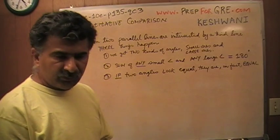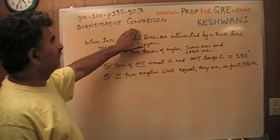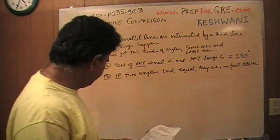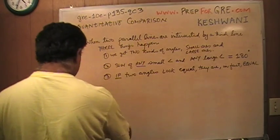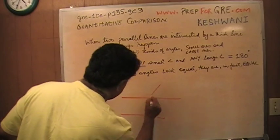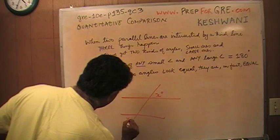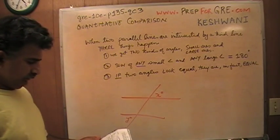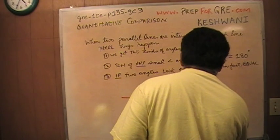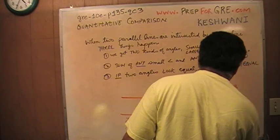The problem that I'm about to do is the one that you're going to find on page number 135. Quantitative comparison question number 3. Let's take a look at it. Here is X and here is Y. And we are asked to compare X and Y, see which one is bigger. Column A and column B. X and Y.